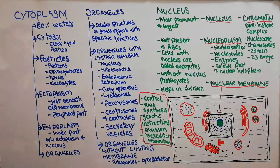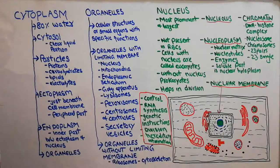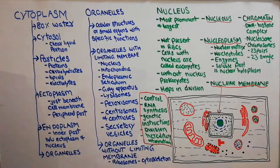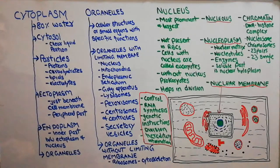Today we are starting our new lecture about cytoplasm. Previously we have discussed the cell, the structure and function of the cell, and the plasma membrane. Now we will discuss the cytoplasm and the cell organelles, functions of the cytoplasm. We have discussed that the human body is made of about 100 trillion cells, different cells that are making the different organs, and the organs combine with each other to form the different systems.